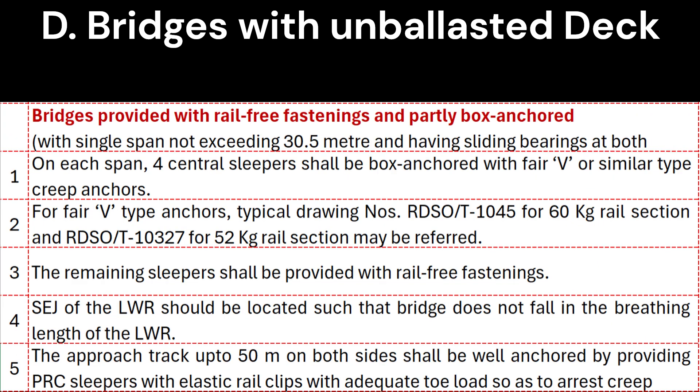Now let's discuss bridges provided with rail-free fastenings and partly box anchored, with single span not exceeding 30.5 meters and having sliding bearings at both ends. 1. On each span, 4 central sleepers shall be box anchored with Fair-V or similar type creep anchors. 2. For Fair-V type anchors, typical drawing numbers RDSOT N-45 for 60 kg rail section and RDSOT 103-7 for 52 kg rail section may be referred.